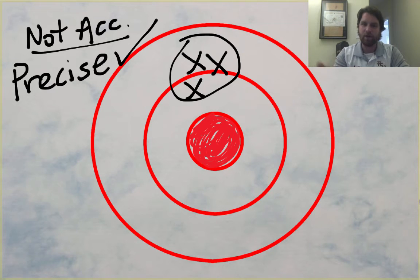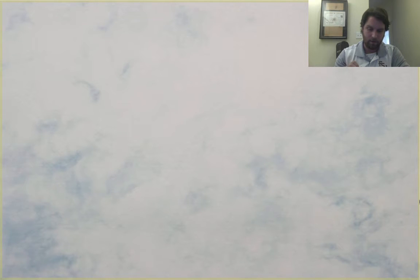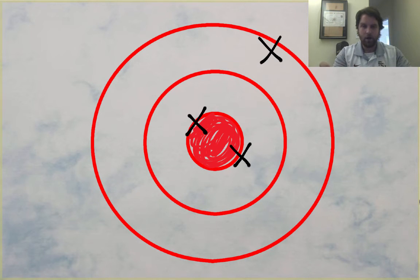So that is an example of precision but not accuracy. Let's just go backwards a whole bunch here and let's say we throw another set of darts and we go, all right, we got one here, one here and one over here. Okay. I'm going to go ahead and say that's pretty accurate.